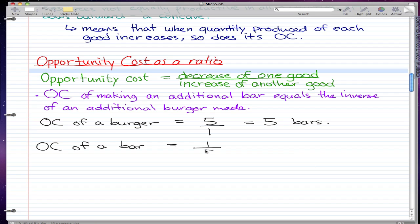And we know that one burger causes five bars. So when we decrease one burger, that means we can produce five more bars. So that is the opportunity cost of bar, which is one over five burgers.